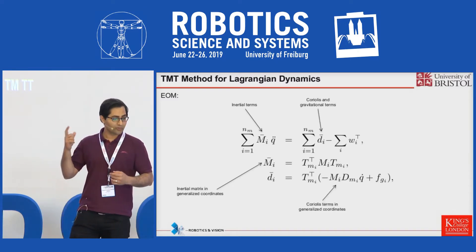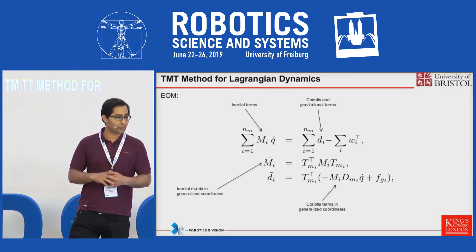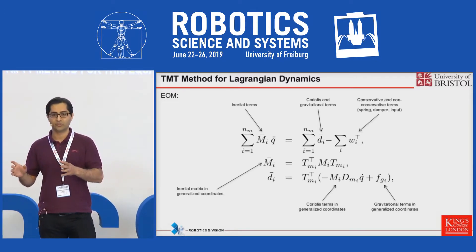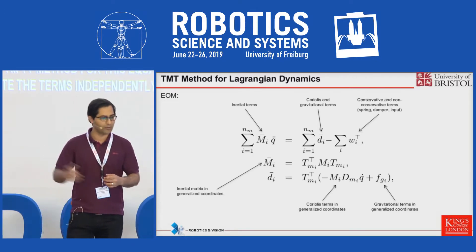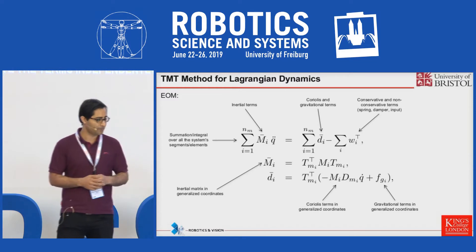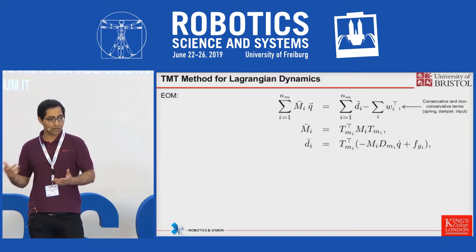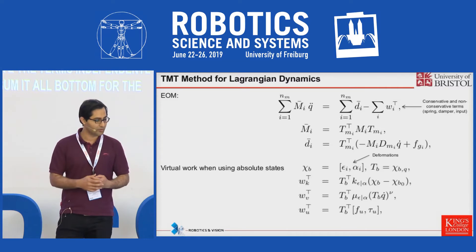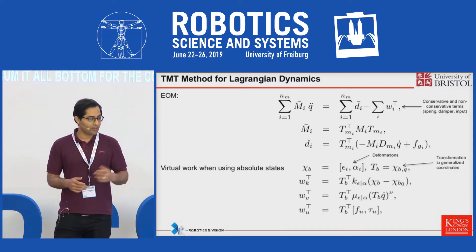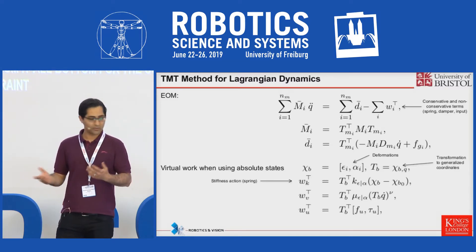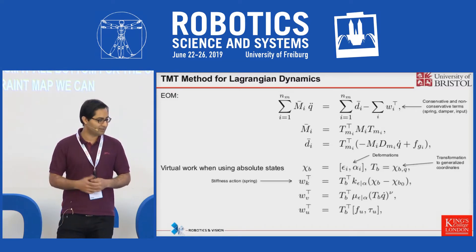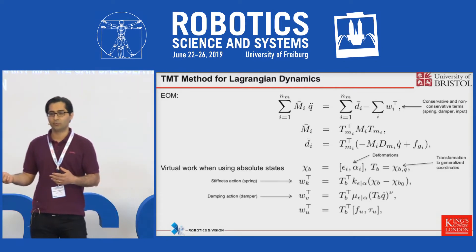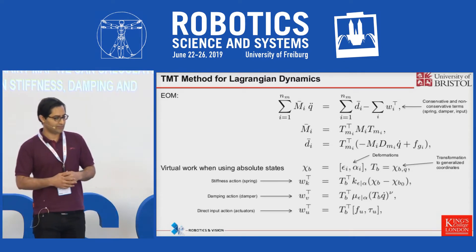Note the sigma there, so we can calculate the terms independently for each element and then just sum it all. For the compliant elements, knowing the strain — basically the deformation map — we can calculate the transformation map and then stiffness, damping, and direct input actions related to that.